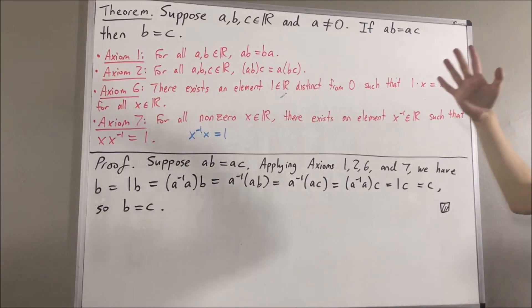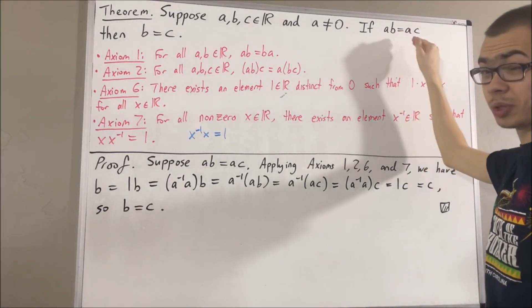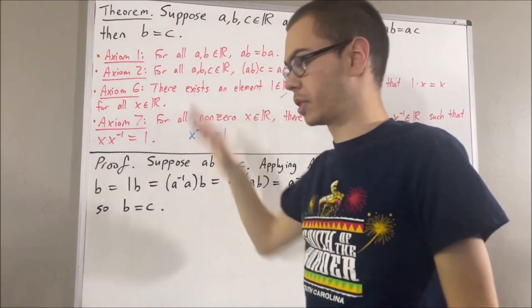Now, a similar argument will show if B times A is equal to C times A, then B is equal to C.